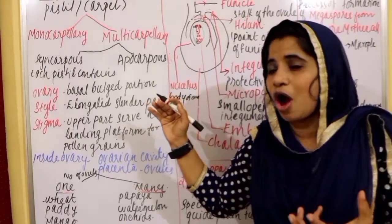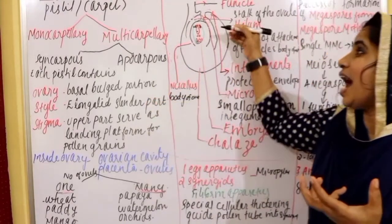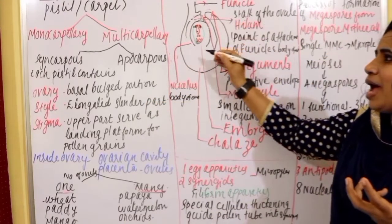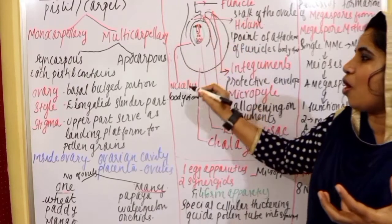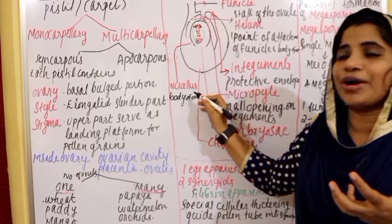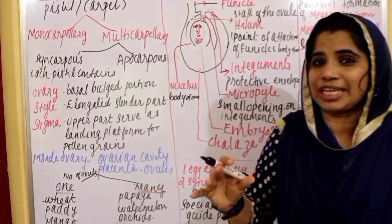The point of attachment of the funicle with the body of the ovule is known as the hilum. The main body of the ovule is known as the nucellus, which contains reserve food materials.